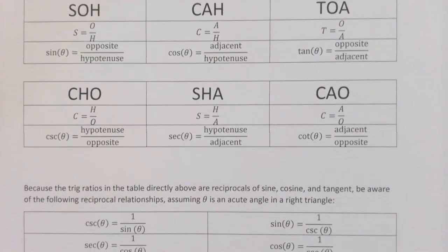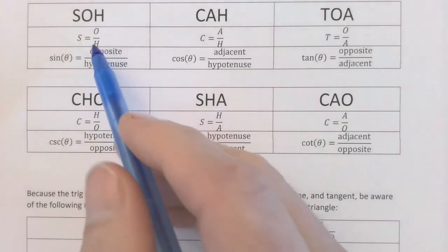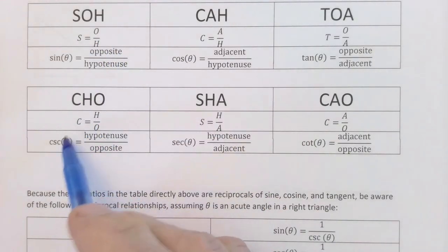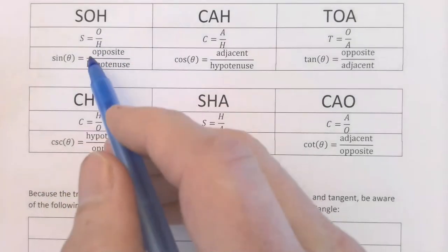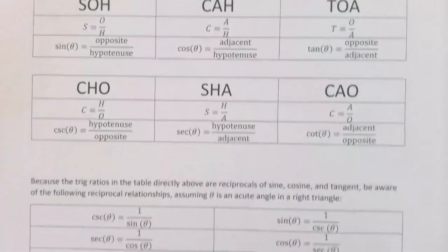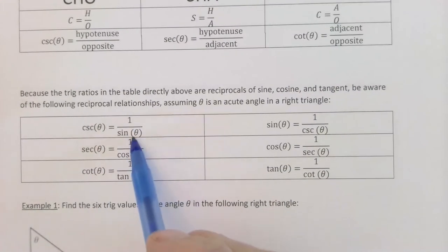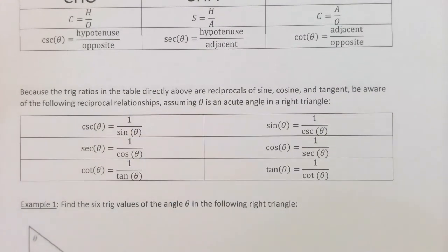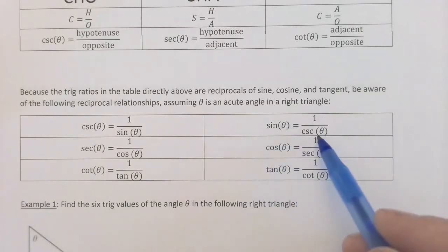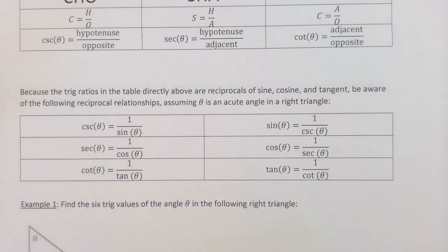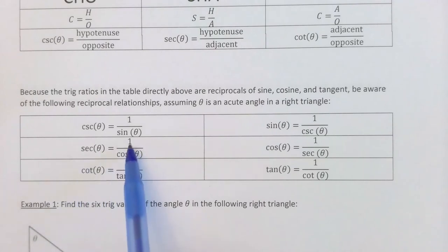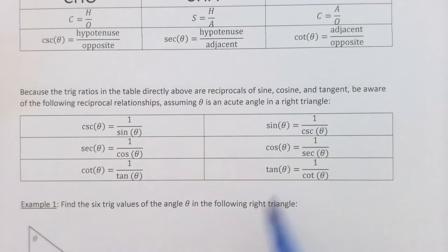Regarding reciprocals: sine is opposite over hypotenuse and cosecant is hypotenuse over opposite, meaning cosecant equals 1/sin and sine equals 1/cosecant. Similarly, secant is 1/cosine and cosine is 1/secant. Finally, cotangent is 1/tangent and tangent is 1/cotangent.